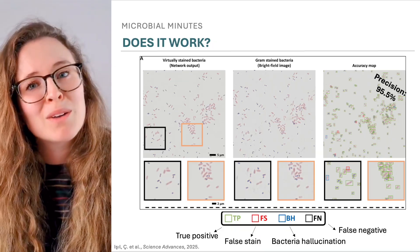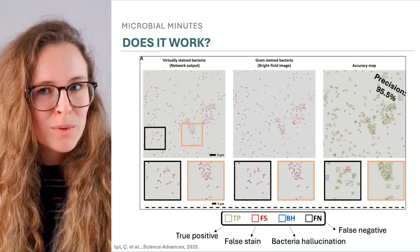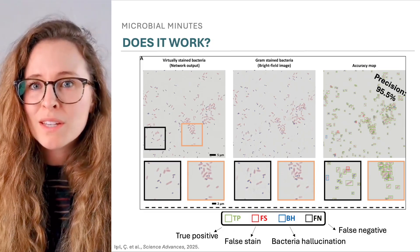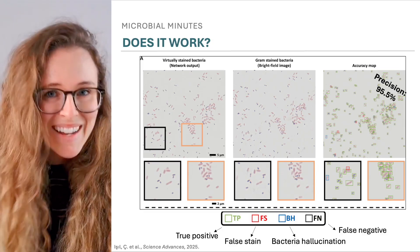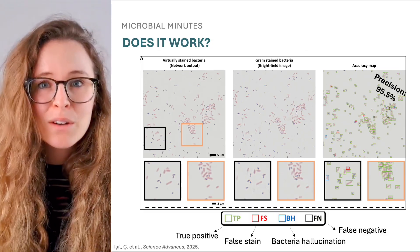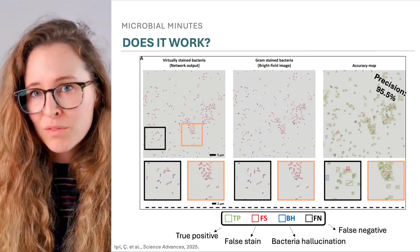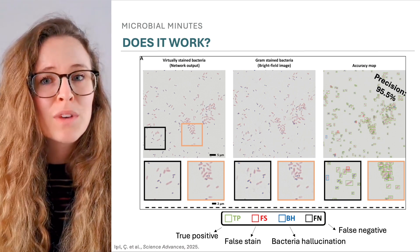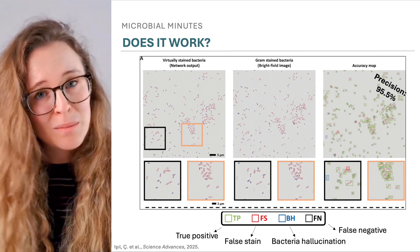Overall, the model had a precision of 95.5%, indicating it is good at marking cells as stained when they are actually stained. It also has a high recall of 96.5%, which points to its ability to find almost all the stained regions in an image.